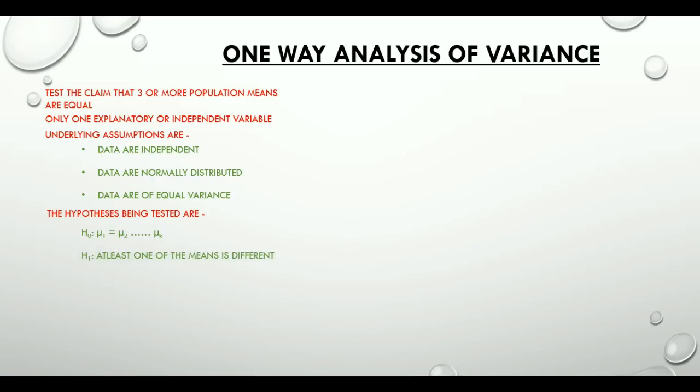Alternative hypothesis states that at least one of the means is different. One-way ANOVA uses F-tests to statistically test the equality of means.